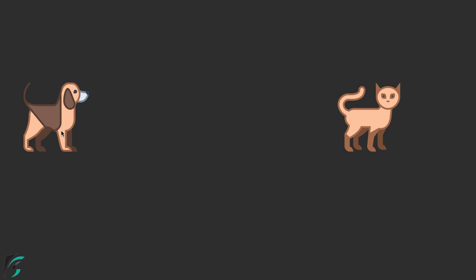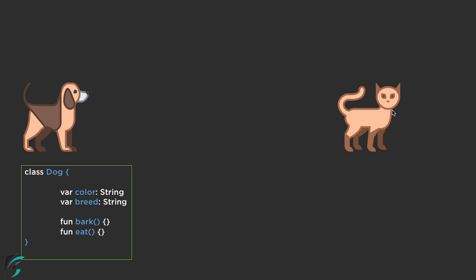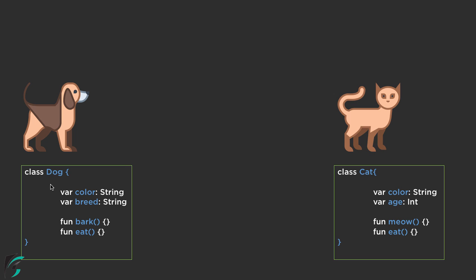So suppose I have here a class Dog and here I have a class Cat. Now in case of class Dog, I have some properties such as color and breed, and some methods such as bark and eat. Similarly, in case of class Cat, I have the properties of color and age and also some methods of meow and eat. If you compare both class Dog and class Cat, you will find there are some common properties such as color and the eat function. So there is obviously some code repetition in both the classes.